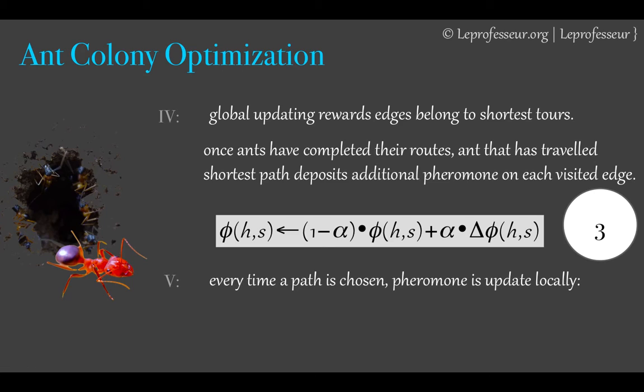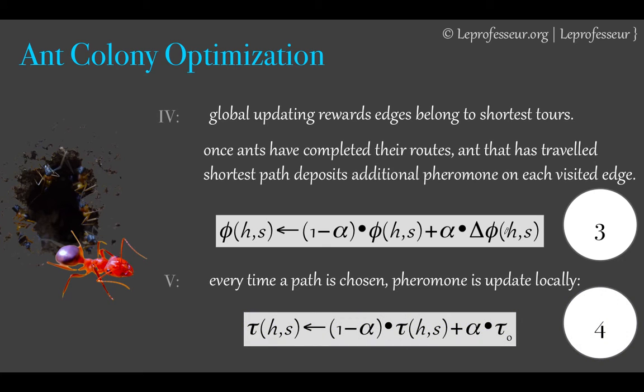And our final step, we may think of how to update the pheromone amount locally. So every time a path is chosen, the pheromone amount is updated locally. And how? We can make use of equation 4. The tau is the amount of pheromone at edge H and S. Again, 1 minus alpha is some constant and alpha and tau 0 is some constant amount or threshold amount, you may call, or some initial value of the pheromone.